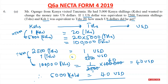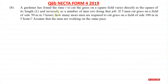That's the answer for 6A. Now for B, we're told a gardener has found that the time t to cut the grass on a square field varies directly as the square of its length, and inversely as the number of men doing that job. If 5 men cut grass on a field of size 50 metres in 3 hours, how many more men are required to cut grass on a field of size 100 metres in 5 hours? Assume that the men are working at the same pace.